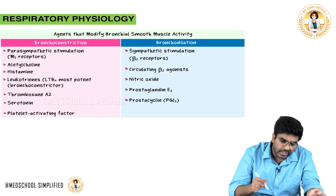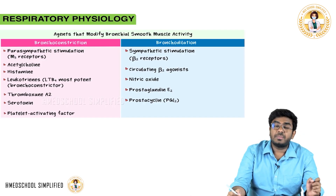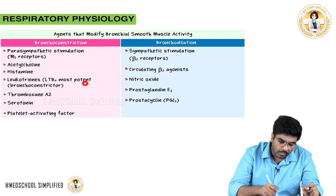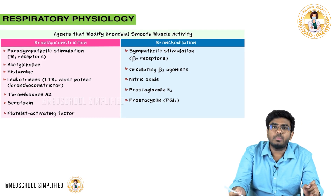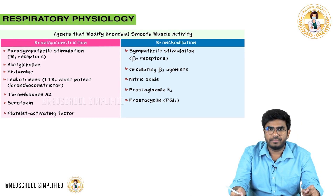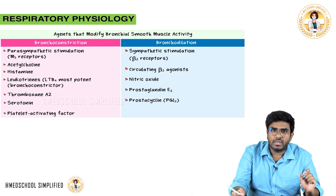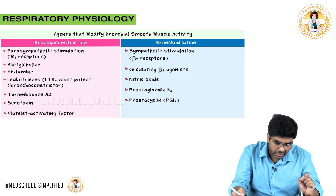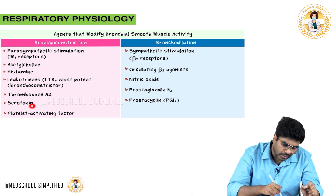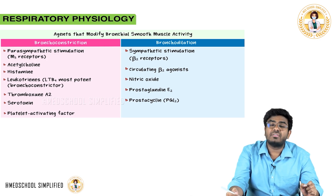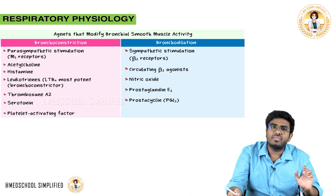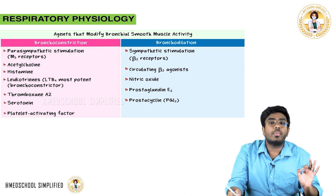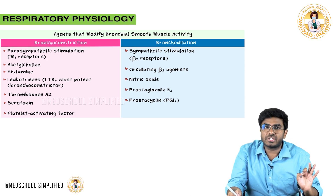Leukotrienes — especially leukotriene B4 — are the most potent bronchoconstrictors. Thromboxane A2, serotonin, and platelet-activating factor are also substances that cause bronchoconstriction.